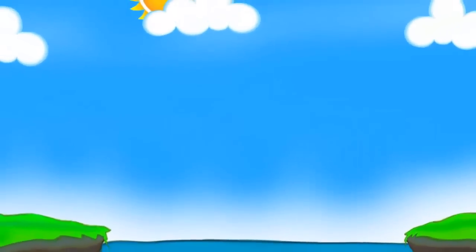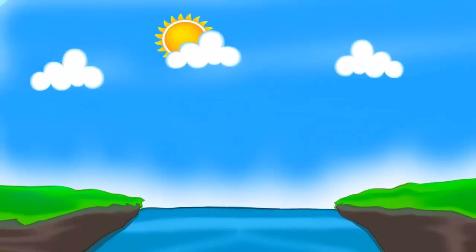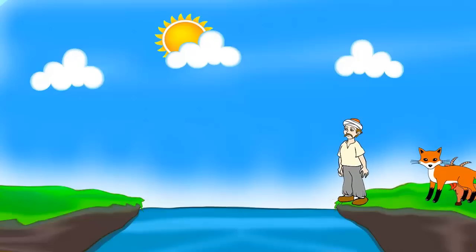This is the most common river crossing brain teaser. A farmer was returning from the city to his village. The farmer had bought a fox, a goat, and a cabbage for his family.